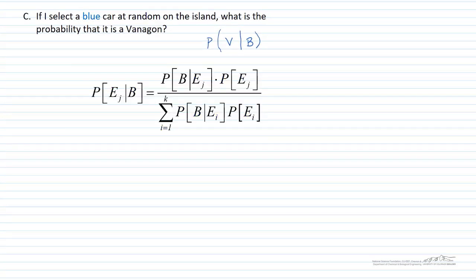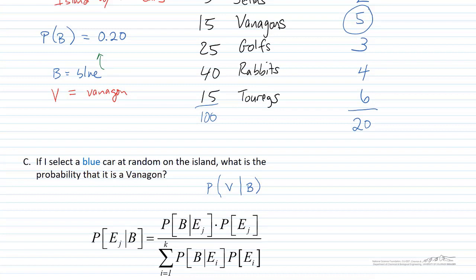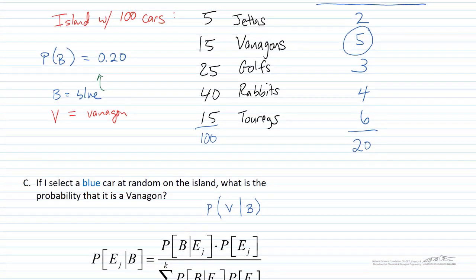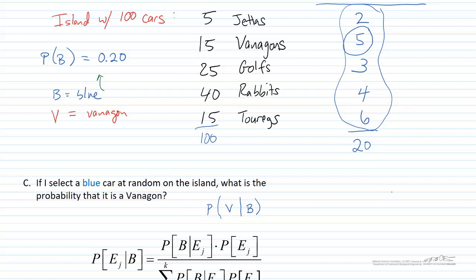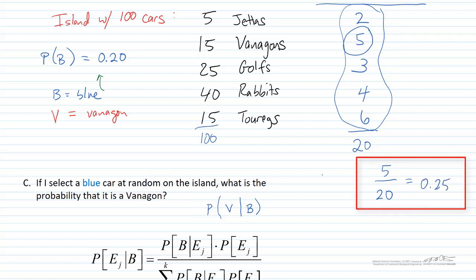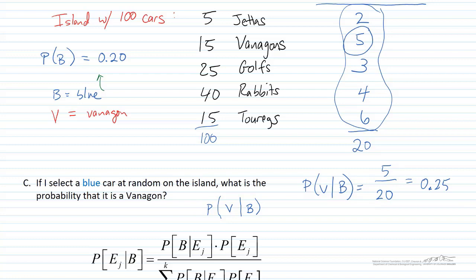Before we do the math with Bayes' Theorem, I wanted to show you a shortcut. If you have the data, don't get too carried away with formulas. You're being asked: if you select a blue car at random, what's the probability it is a Vanigan? You're only considering the 20 blue cars. There are 5 Vanigans among them, so there's a 25% chance. P(V | B) = 5/20 = 0.25. This shortcut is equivalent to Bayes' Theorem, as I'll show mathematically.